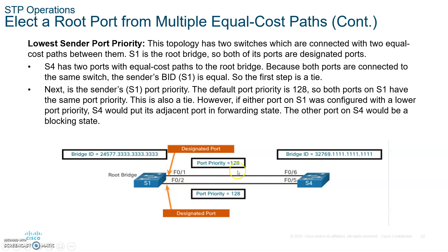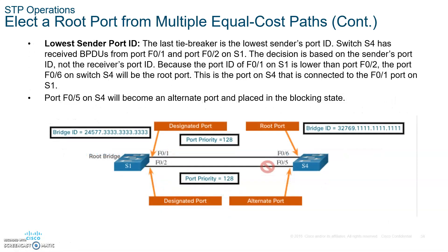You could change the cost if you want, or if you leave the cost the same, you could change the port priority number. But if you leave everything the same — for example, both links are 10 gigabit with a cost of two, and port priority is 128 — then the port ID will be used by default.